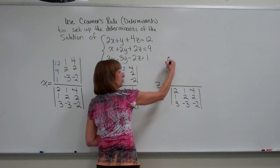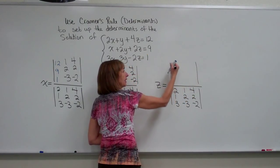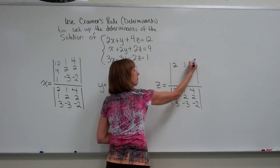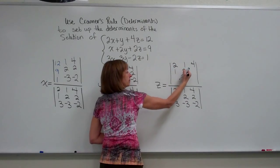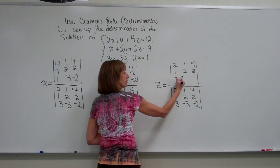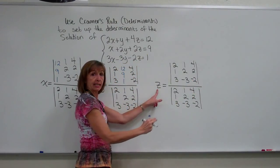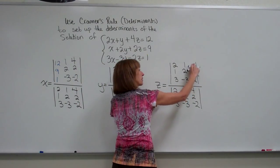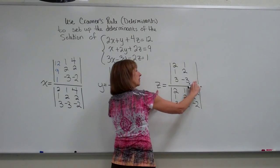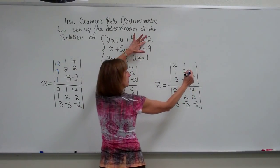And then for the numerator for z, again, copy the determinant from the denominator. For z, erase out z's coefficients and replace them with the constants.